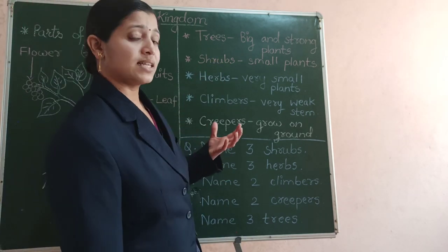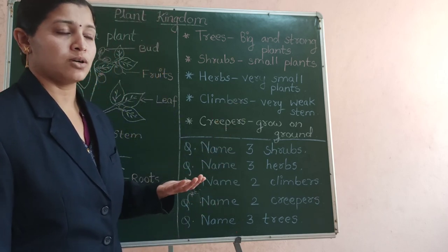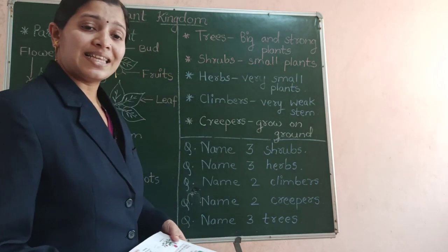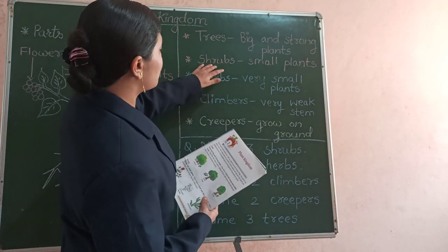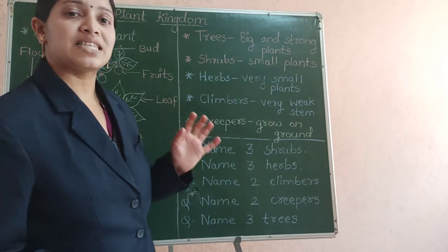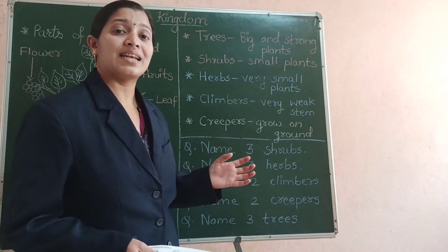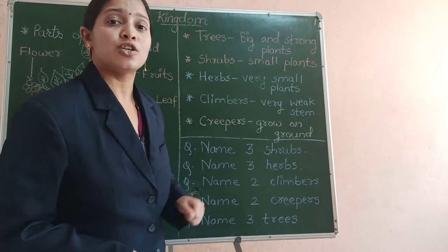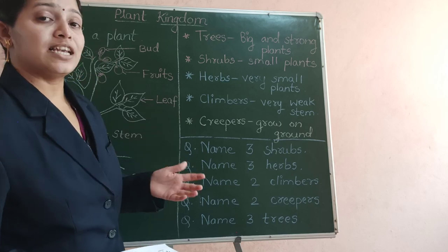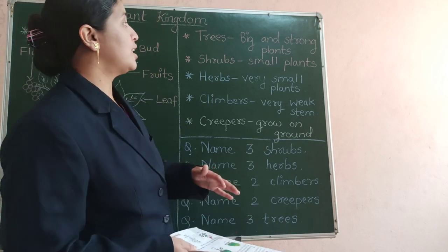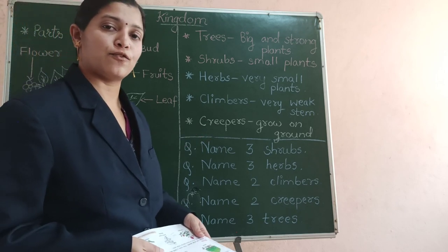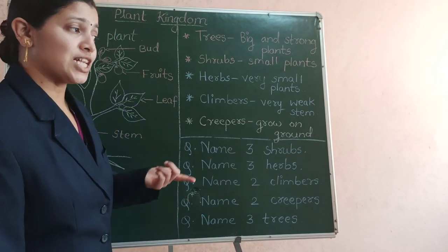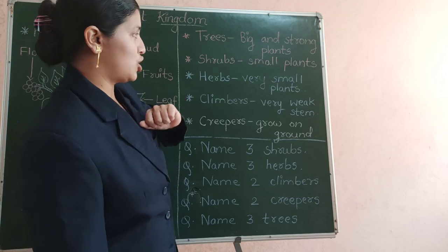The henna plant, that is the mehendi plant, is also a shrub. The stem of shrubs is hard but thin — not thick like the mango or coconut tree. These shrubs can live for a few years. Also plants like tulsi plant and jasmine plant are also called shrubs.